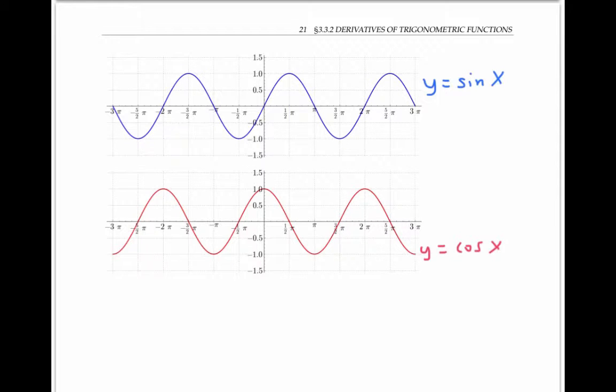A graph of the function y equals sine x is given in blue here. We can estimate the shape of the derivative of sine x by looking at the slopes of the tangent lines. Here, when x equals zero, the tangent line has a positive slope of approximately one.